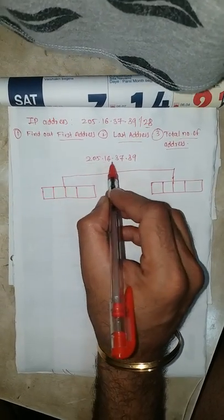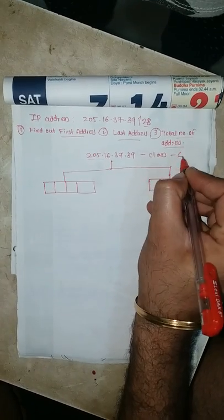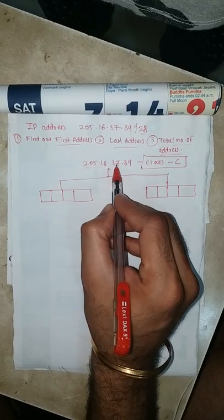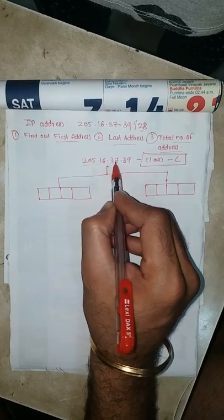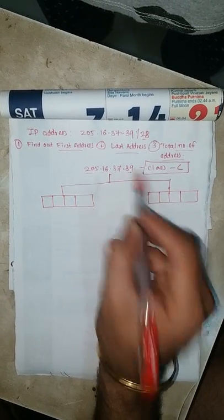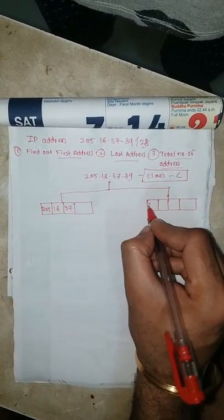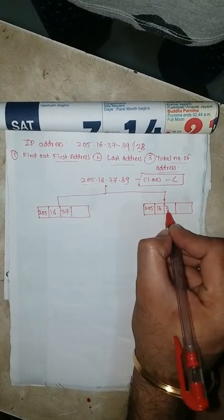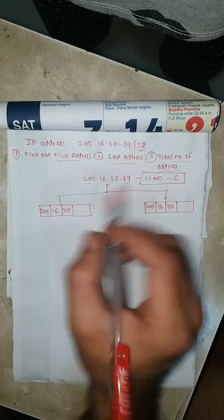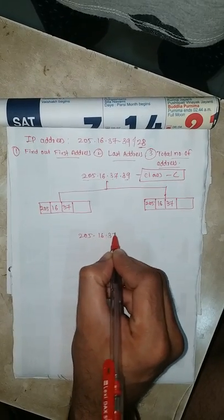As we know, 205 is from Class C. In Class C, the first three octets are called the network address and the last one is called the host ID — first is network ID, last is host ID. So I write down 205.16.37 as it is. The subnet mask required is /28 for our IP address 205.16.37.39.